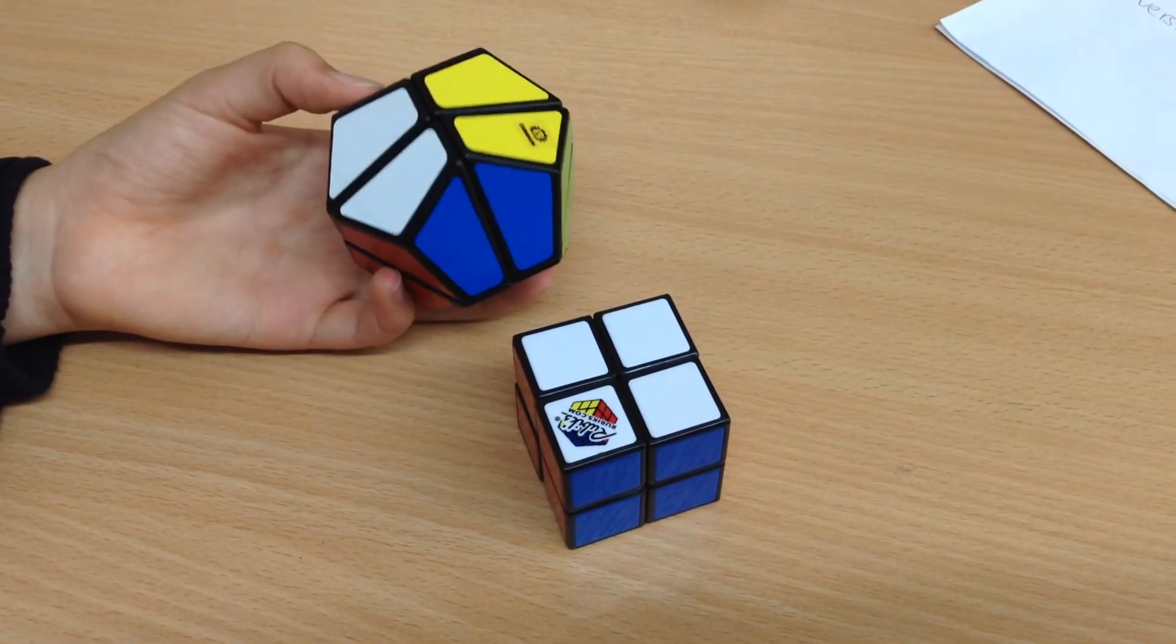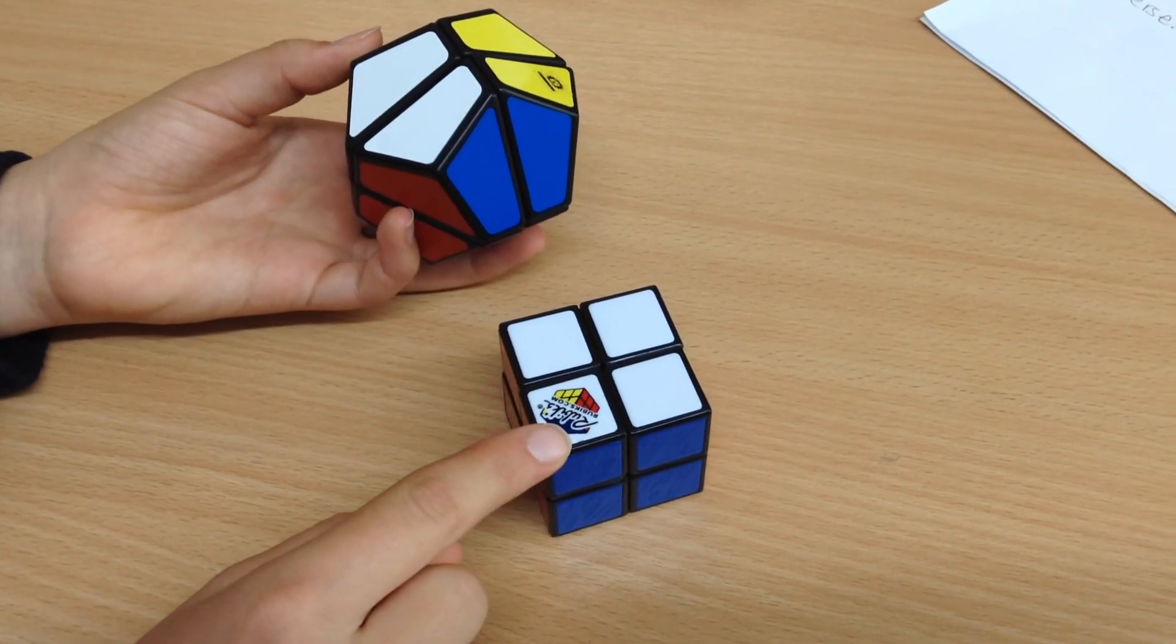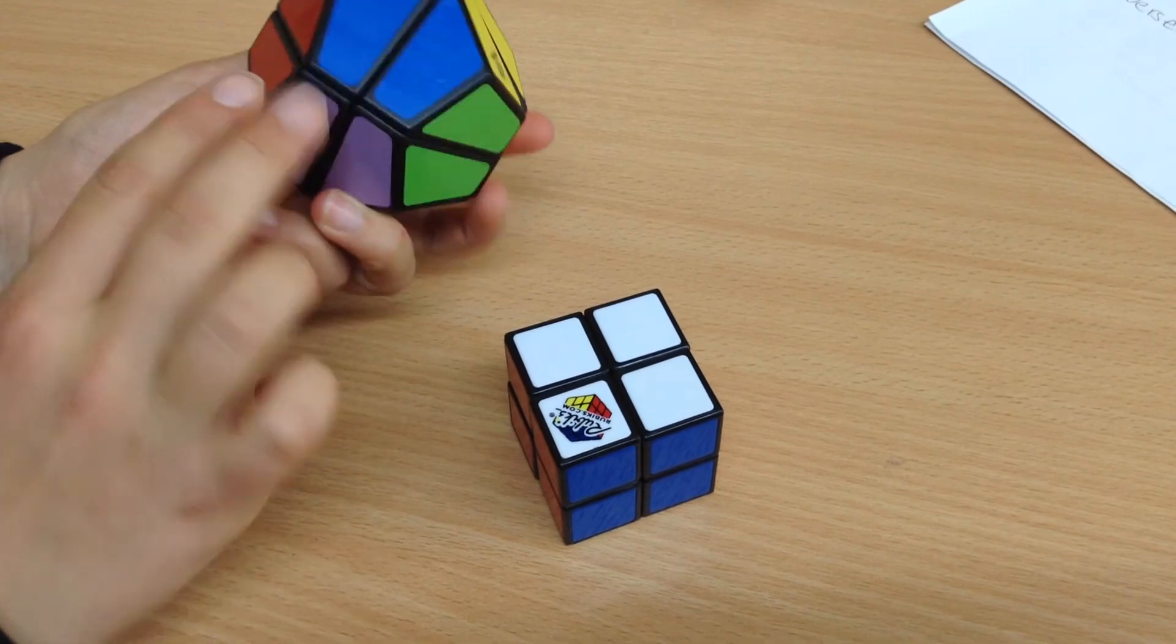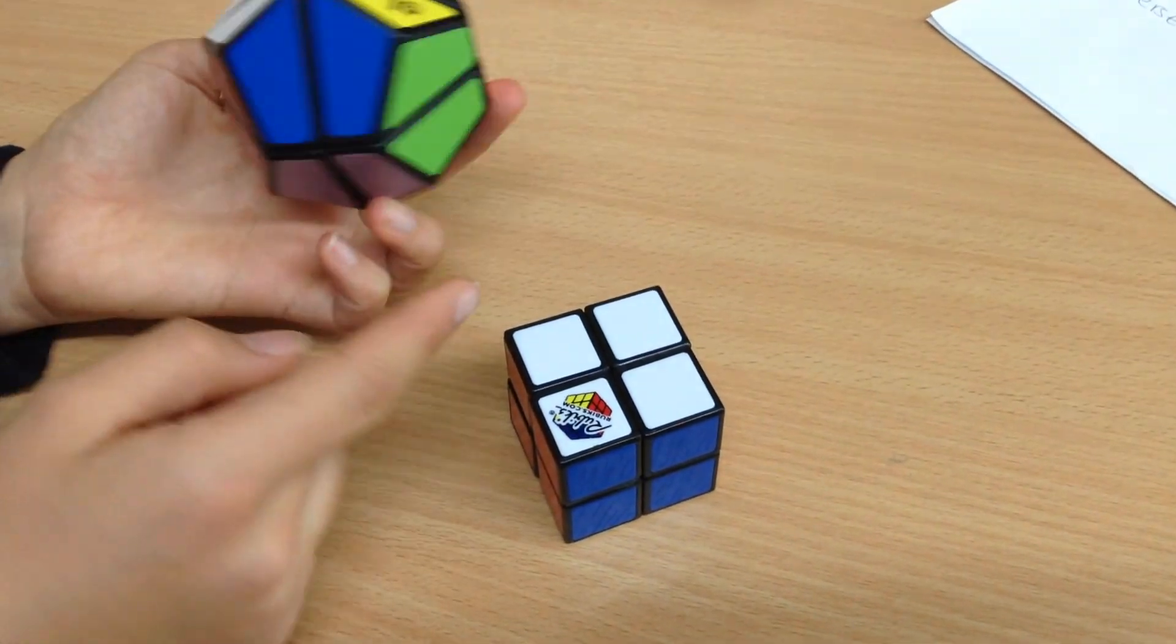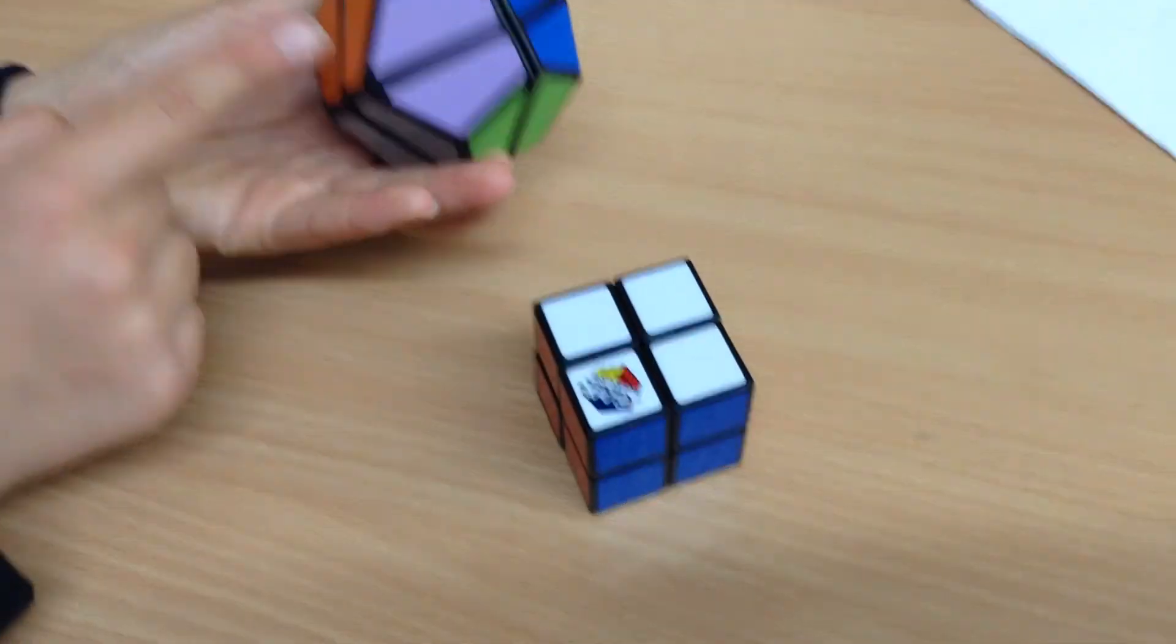So it looks like that this is the top face as it is on the 2x2. This is the front face. This is the right face. This is the back face. And this is the left face. And the bottom face.